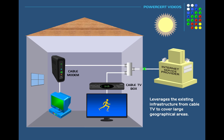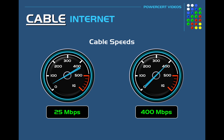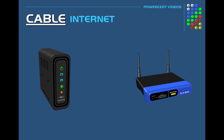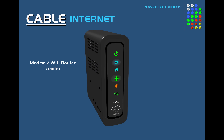Today if you want broadband cable, your provider offers different packages that vary in speed. For example, Xfinity offers download speeds anywhere from 25 megabits per second all the way up to 400 megabits per second. If you order cable internet for your home, your cable provider would send you a modem — or typically a modem with a Wi-Fi router combo, often referred to as a gateway.